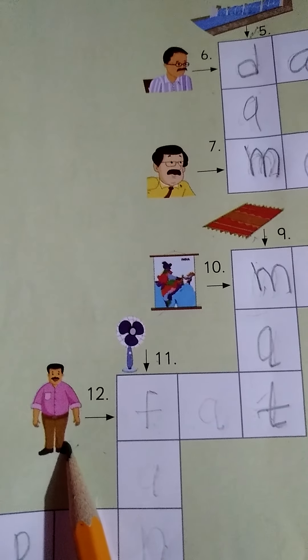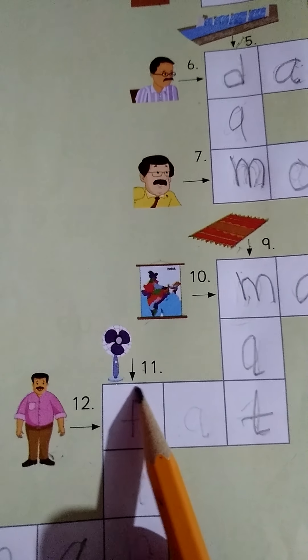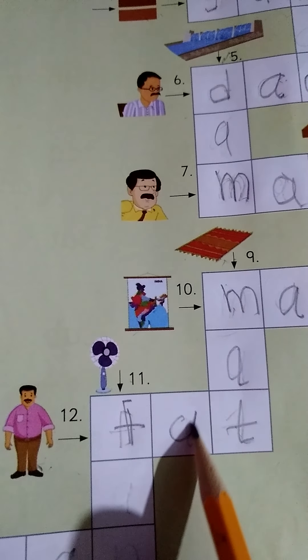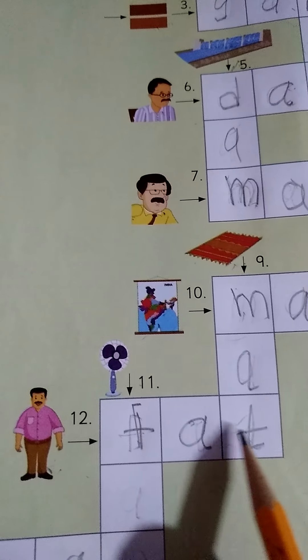What is the picture? This is man. This is fat man. So we write here F A T. F A T fat.